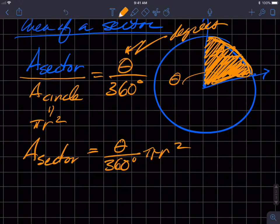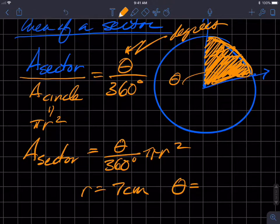So if we have, let's say that r equals seven centimeters, let's pick a nice prime number. And let's say that the angle measure is 60 degrees, okay?